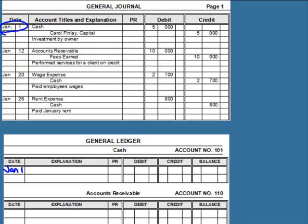So we take the date from our journal entry and transfer it down — January 1st. There's nothing written in the explanation column for the general ledger because the explanation is already in the general journal and we don't want to repeat it. The next column is the PR column, which stands for posting reference — indicating where we're getting the number from. We write a G for general journal and the page number, so G1 for page one. Then we transfer the amount — the $5,000 from the debit column — into the debit column of the general ledger.